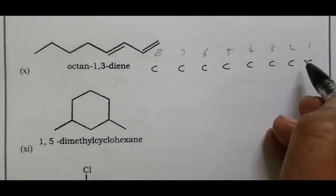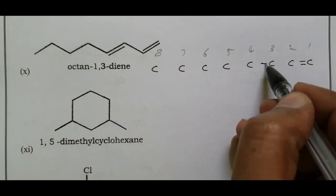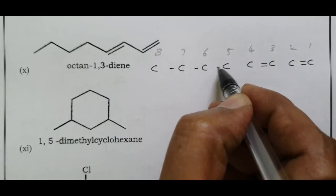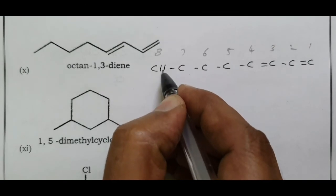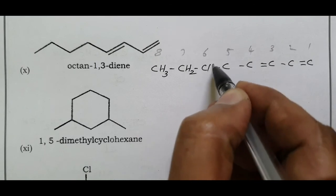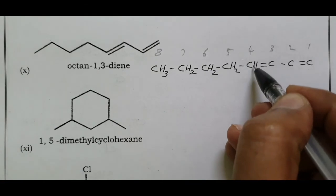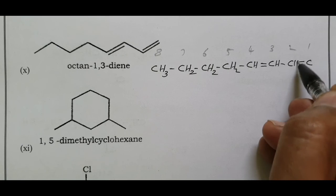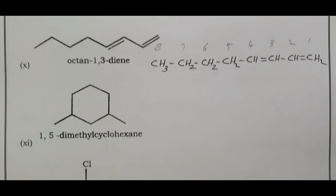Carbon one has a double bond, and carbon three also has a double bond. Carbon bonding: three bonds at one position, three bonds at another, two bonds at the next. This gives a 1,3-diene structure.